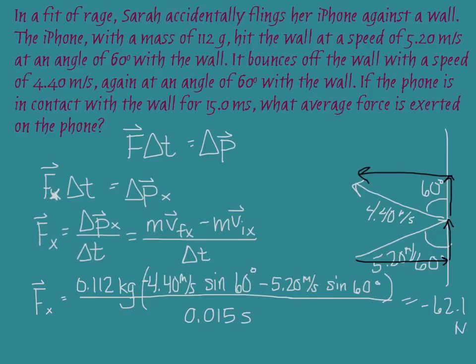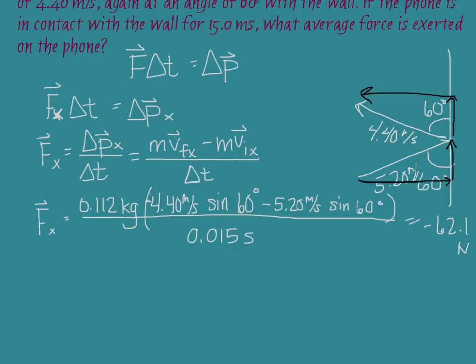We also need to find the y-component of the force. Finding the y-component works basically the same way, except instead of using sine functions we use cosine, because the y-component is adjacent to the angle in each case. We also pay attention to direction. Try calculating that component yourself. You should have found the y-component to be negative 2.99 Newtons. Negative indicates it is downward, which makes sense because the y-component of the initial velocity is larger than the y-component of the final velocity.